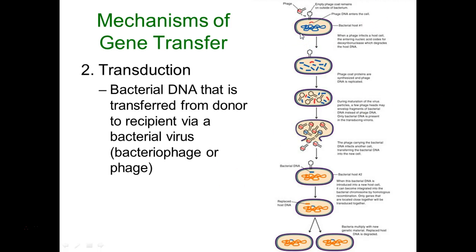At the basic level: a cell gets infected by a phage, which takes over and turns it into a virus-making factory. For some reason, some capsids pick up bacterial DNA instead of viral DNA. The phage attaches to another cell and injects bacterial DNA — not viral DNA — so its life cycle ends. It was just used as a free ride for some DNA. If that recipient bacteria keeps the DNA, it has been transduced and has changed.